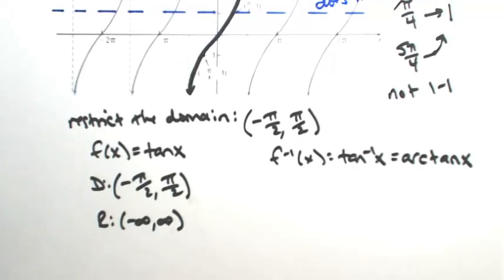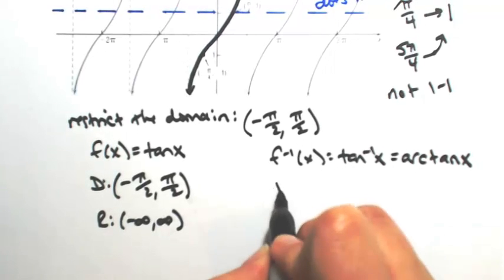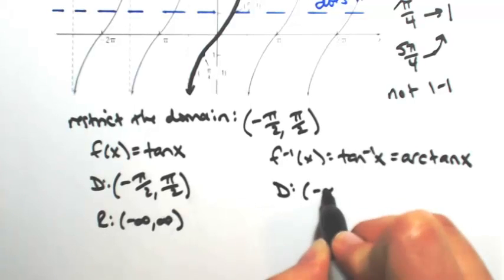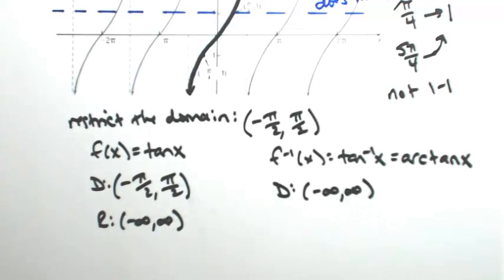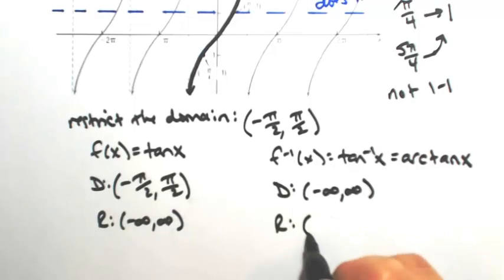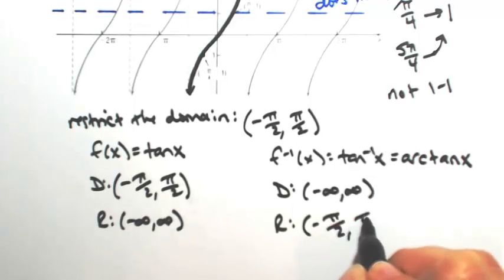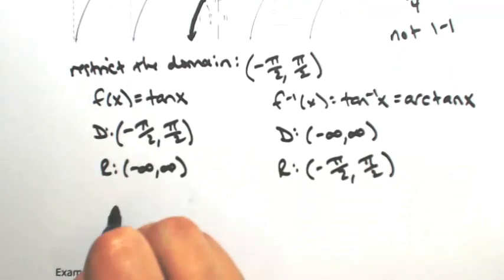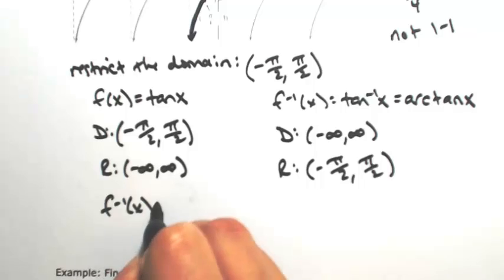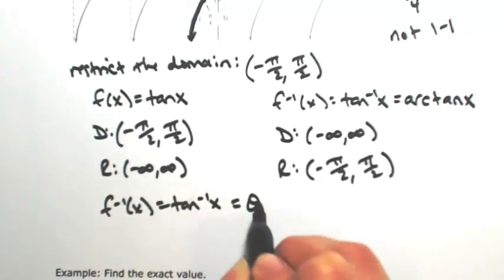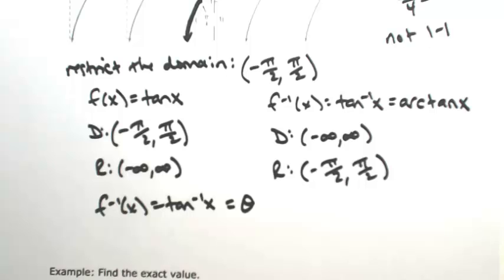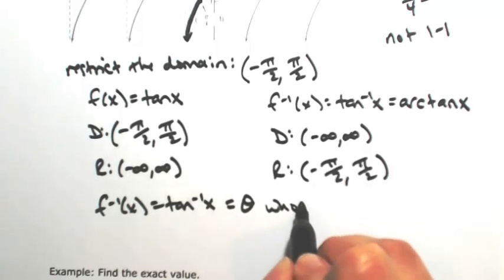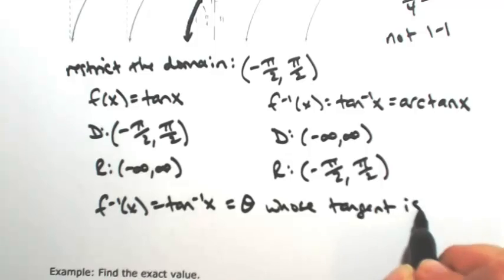Because we have an inverse, domain and range are going to flip. So the domain of the inverse tangent is actually going to be all real numbers — which means the inverse tangent will always be defined. The range will be an angle between negative π/2 and π/2. The best way to think about this is that the inverse tangent is merely an angle θ — specifically, an angle whose tangent is x.